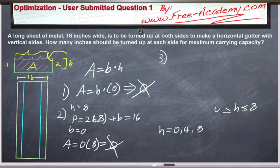So this just leaves us with the third case. h is equal to 4. Put it in area equals 4 times, and now we need to solve for the base. 16 equals 2 times 4 plus base. This is 8. 16 minus 8, base is equal to 8. Area is equal to 32.